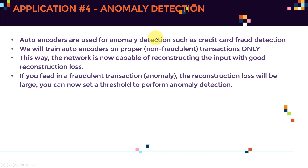The last application is anomaly detection. Autoencoders can be used for credit card fraud detection. We train an autoencoder only on proper, non-fraudulent transactions — all the good, legal customer transactions. When we feed in any input from these proper transactions, the reconstruction loss will be very small, meaning the network reconstructs the input well.